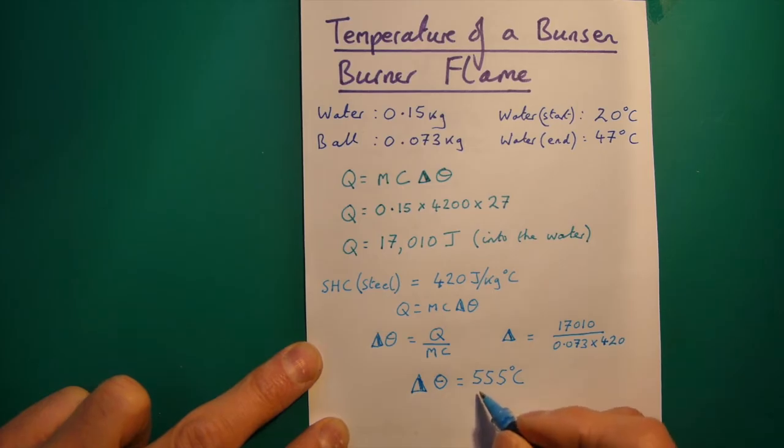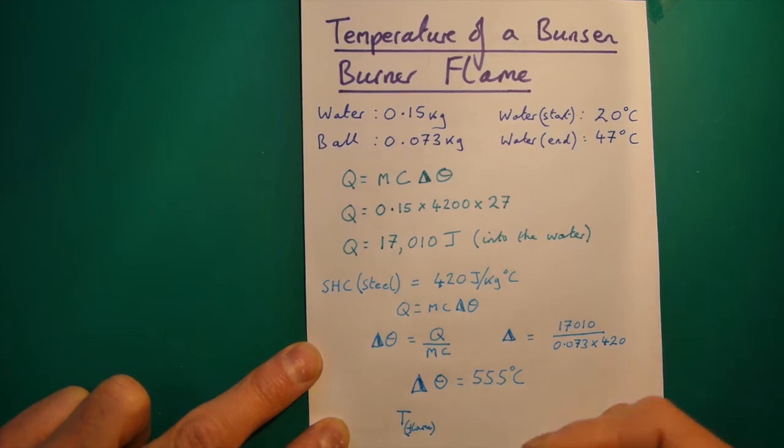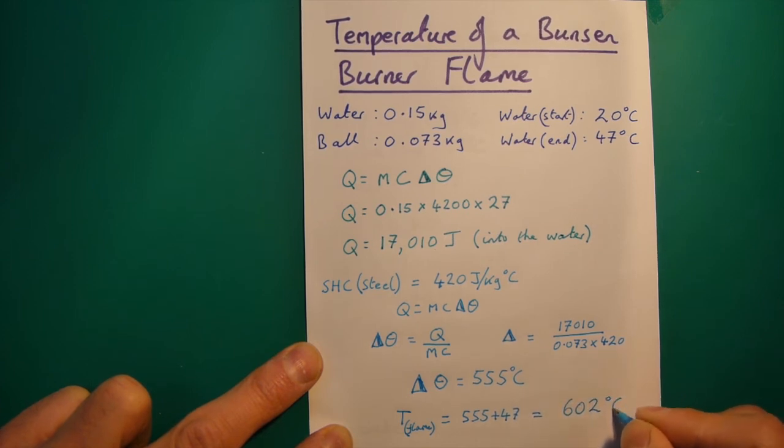Now, finally, just remember that this is how much we'd raise it by. So, the actual temperature of the flame, because the flame temperature we're arguing is the temperature that the ball was at when we took it out of the flame, is 555 plus 47 degrees C. So, that equals 602 degrees C.